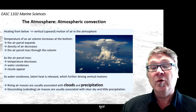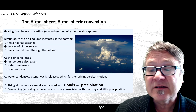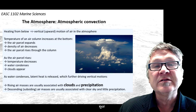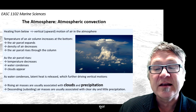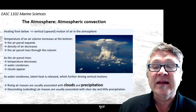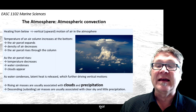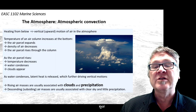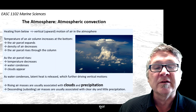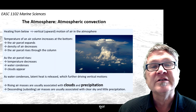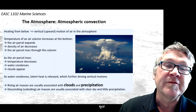Rising air masses are usually associated with clouds and precipitation, while descending or subsiding air masses are usually associated with clear sky and little precipitation. That's a useful thing to know.